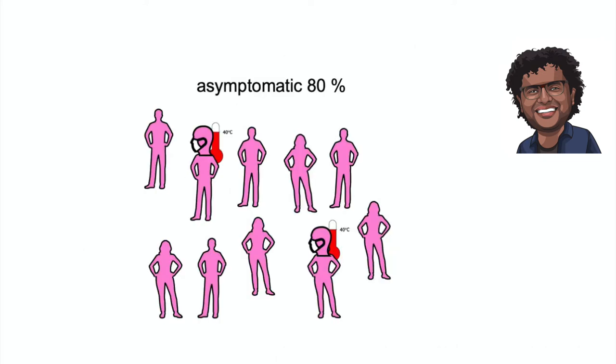Asymptomatic cases are another uncertainty. Estimates suggest that 80% of COVID-19 cases are mild or asymptomatic, implying that symptom-based control is not enough.